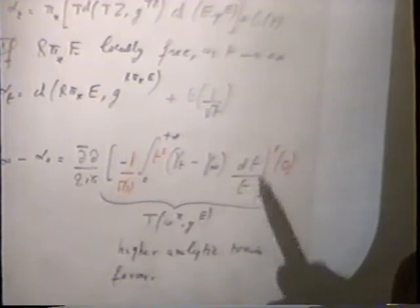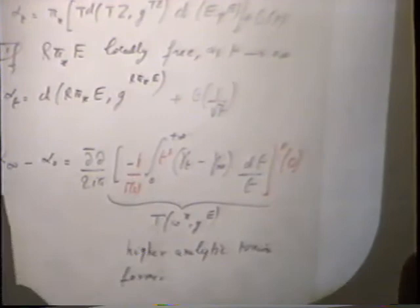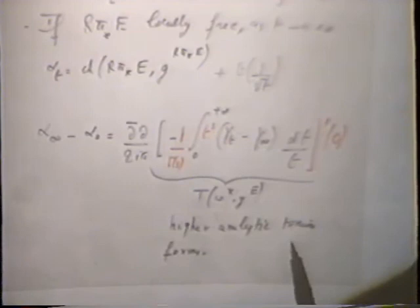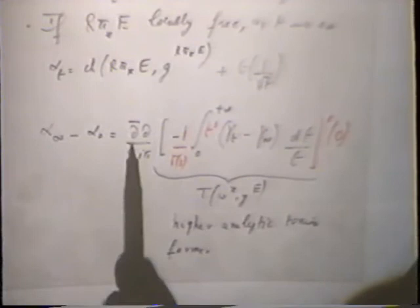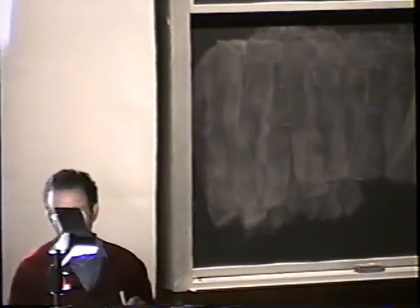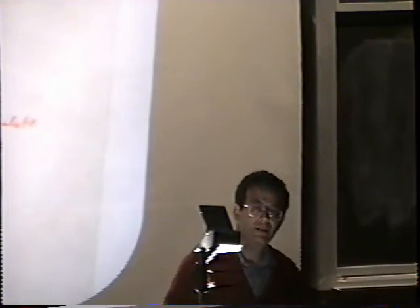As t→0, alpha_t converges to the integral along the fiber of a Riemann-Roch-Grothendieck differential form with characteristic classes calculated using holomorphic Hermitian connections. As t→∞, if the direct image is locally free, alpha_t converges to the Chern character of the direct image, i.e., of the cohomology of the fiber. By integrating the double transgression equation from t=0 to infinity, we find alpha_∞ minus alpha_0 equals the integral of gamma_t/t dt. However, this integral does not converge, so we must regularize.